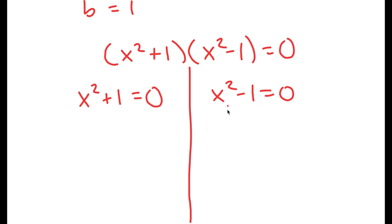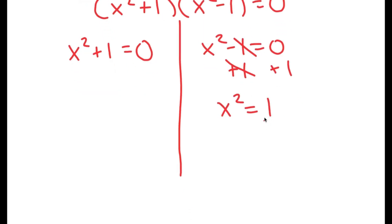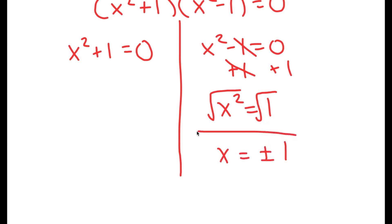To solve x squared minus 1 equals 0, I'm going to first add 1 on both sides, so I get x squared is equal to 1. Now I'm going to take the square root on both sides. The square root of x squared is x, and I get x equals positive or negative 1.